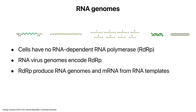Let's look at RNA genomes. Cells do not have enzymes that can copy RNA genomes — that's important to remember. Cells have no RNA-dependent RNA polymerase. Therefore, these viral genomes all have to encode one. The exception is viroids, which may not even be viruses. RNA virus genomes encode this RNA polymerase, and they produce mRNA and more genomes from RNA templates. These RNA can come in many different forms — segmented, single or double-stranded, even circular.